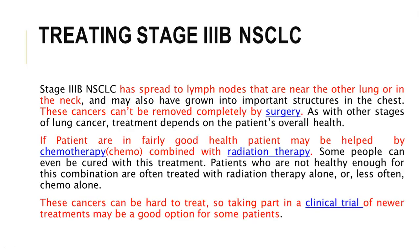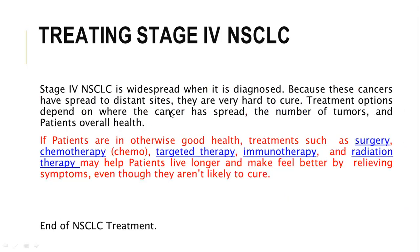Stage 3B has spread to lymph nodes near the other lung or in the neck, and may have gone into important structures in the chest. These cancers cannot be completely removed by surgery alone, so radiation therapy and chemotherapy combined with surgery are needed. Some people can be cured at this stage. Patients not healthy enough for this combination may receive radiation therapy alone or chemotherapy alone. Taking part in clinical trials for newer treatments may also be a good option.